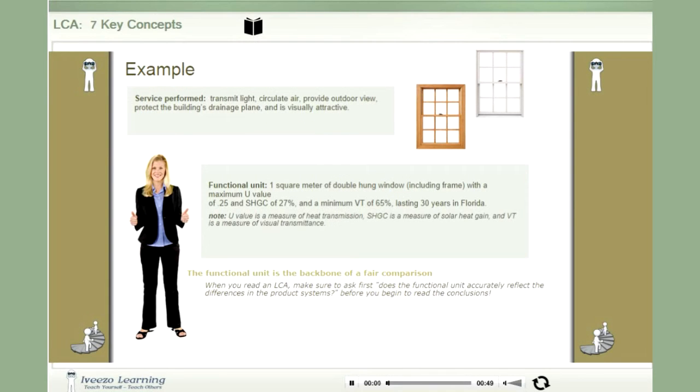In our hypothetical window example, let's first ask what service the windows provide. They transmit light, circulate air, provide an outdoor view, protect the building's drainage plane, and are visually attractive.